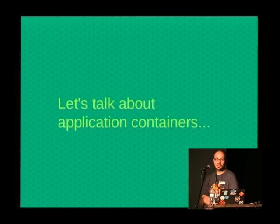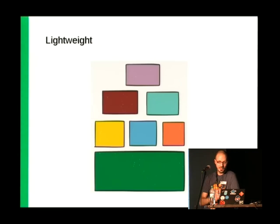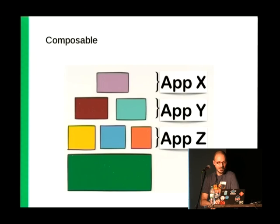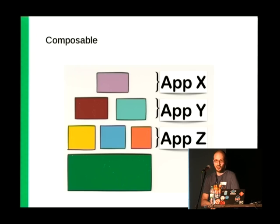Let's start with application containers. I'll assume you know about them at least to a certain degree. They are lightweight, so you can run a lot of them on a single machine. The containers are the little boxes on screen; the big green box is the main OS — OpenSUSE. Because they're lightweight, you can have lots on a single machine. They're also composable: you're encouraged to combine them to build applications. You can combine two or three of them — this is the whole microservices thing that is such a hype nowadays.